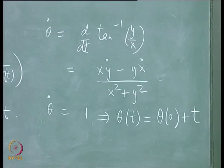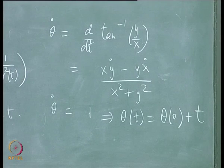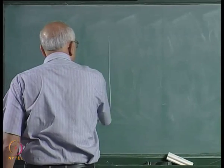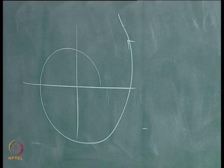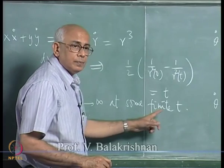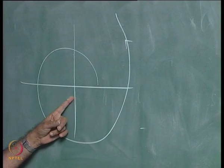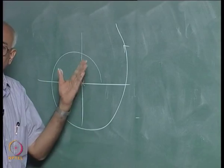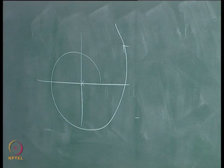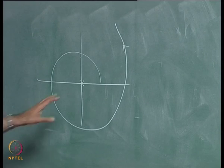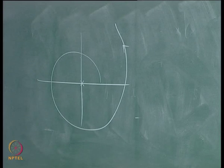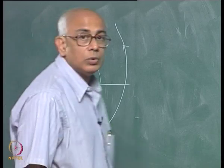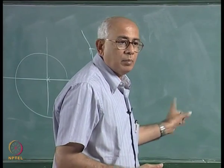So in this particular problem, linearization has led to a completely erroneous conclusion. If you restricted yourself to the linear part of the system, you conclude the origin is a stable center — but it turns out that is not so at all. Wherever you start, you actually flow outwards such that you hit infinity at some finite value of time because of this specific form of nonlinearity. The origin is not a center; it is an unstable node, and this clearly shows the perils of linearization when you have a center manifold.